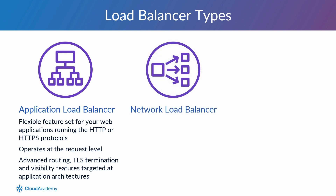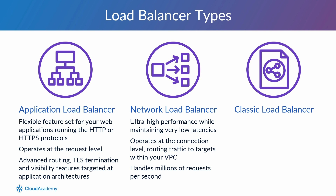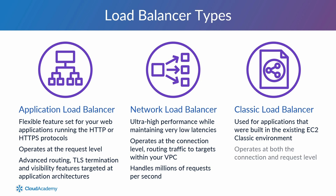Next, there is the Network Load Balancer, used for ultra-high performance for your application while at the same time managing very low latencies. It operates at the connection level, routing traffic to targets within your VPC and it's also capable of handling millions of requests per second. Finally, the Classic Load Balancer, which is primarily used for applications that were built in the existing EC2 Classic environment and operates at both the connection and request level.